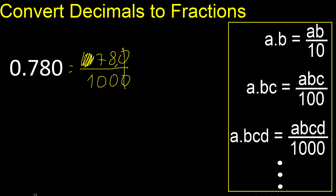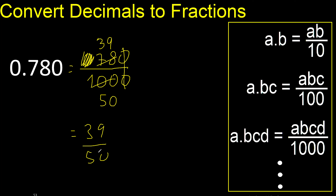Can be simplified because it can be divided by the same number. Divided by 2, divided by 2: 39. Divided by 2: 50. Finish, because it cannot be divided by the same number. Finish.